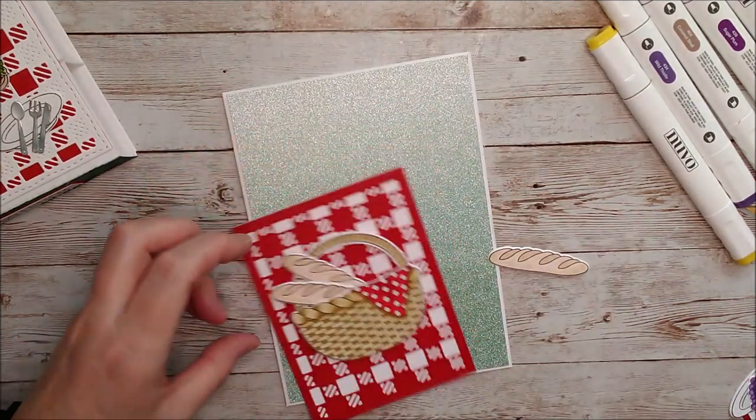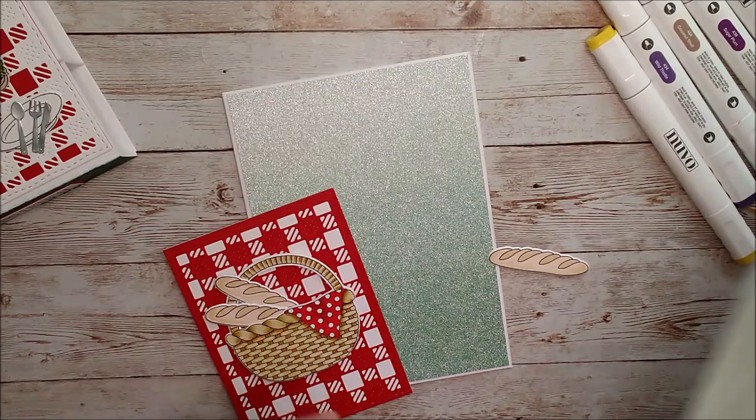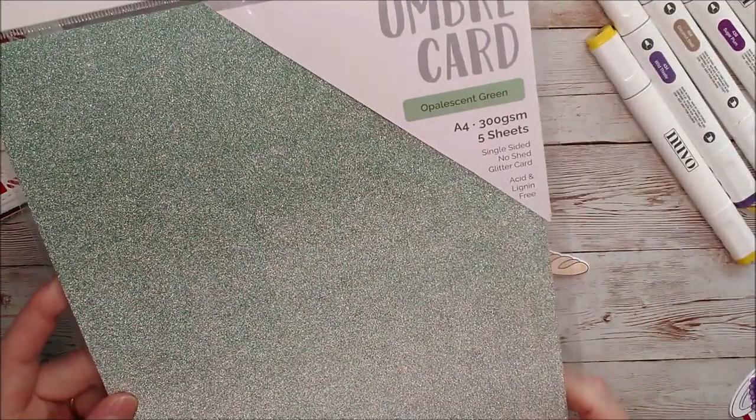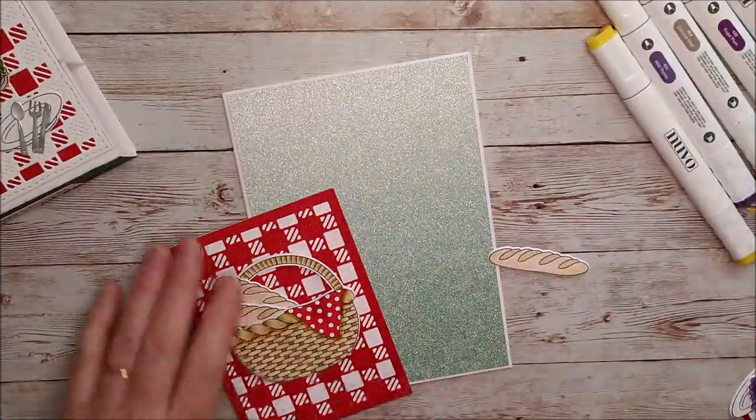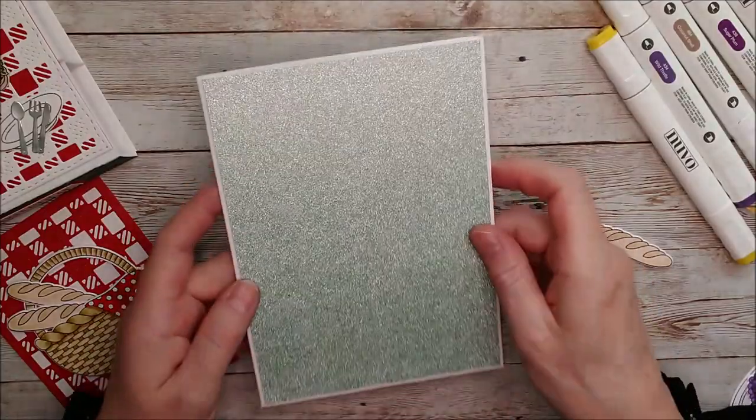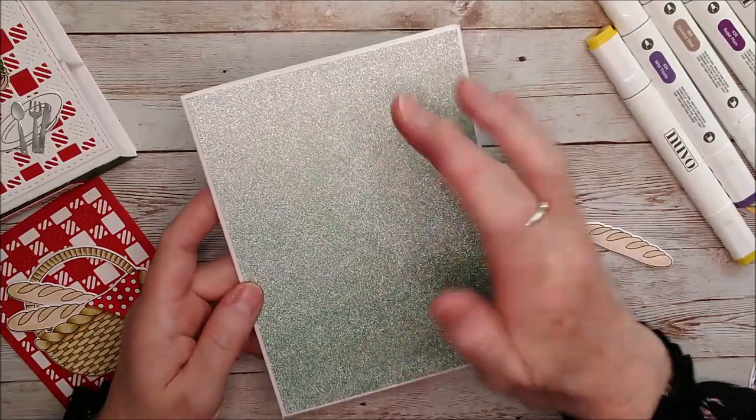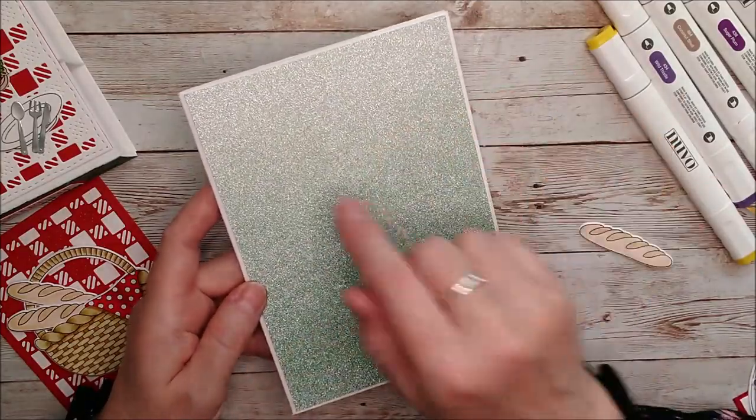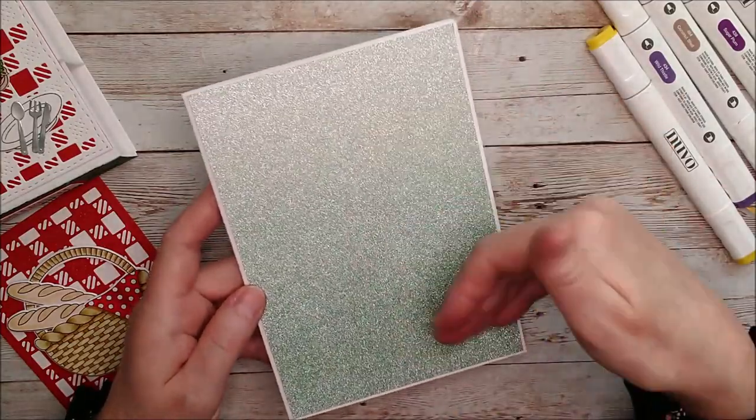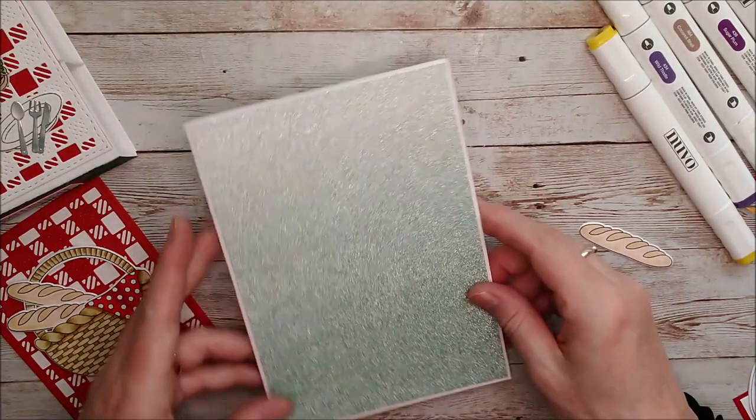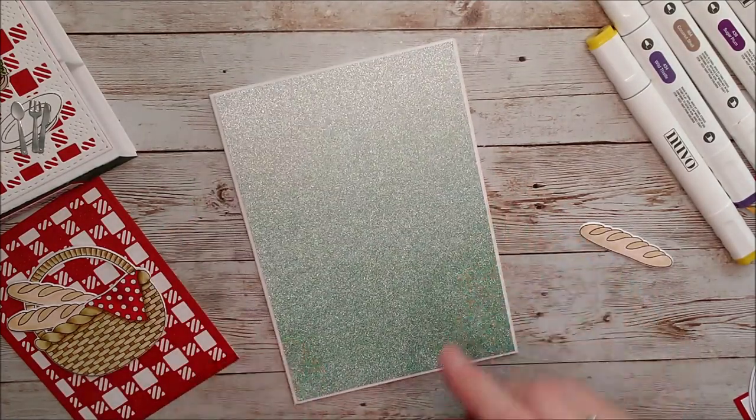But that is the beautiful opalescent green ombre card for the background here. And I hope you can see the ombre effect of that. I've picked a piece out that just suited. I just cut it off exactly where I wanted it to get the gradient going from light to dark there. And I thought that was really beautiful for the background of the picnic scene.